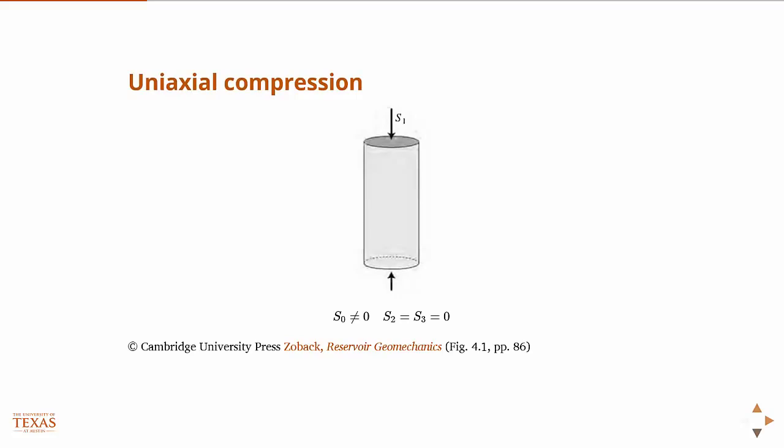Uniaxial compression is the one you've already done, right? This is where the sample is placed in a load frame. It's unjacketed, so it's open to the air. It's placed in a load frame and squeezed from the top until failure. And so the point at which the rock fails in this test is called the unconfined compressive strength of the rock.